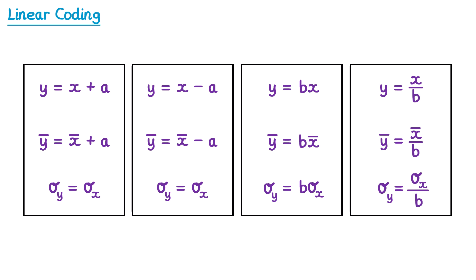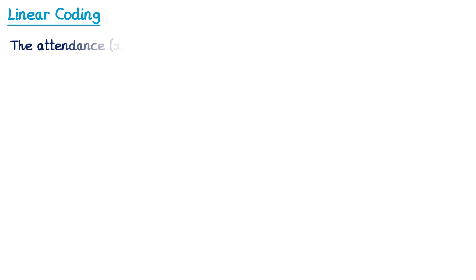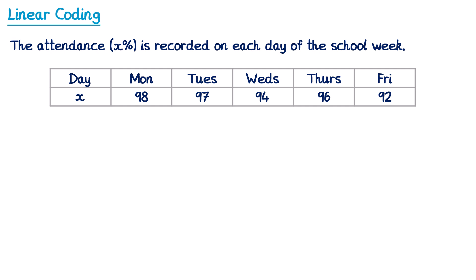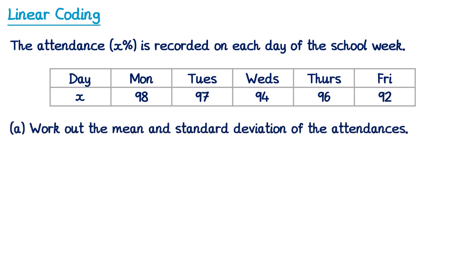Let's have a look at how this could be used in an exam question. In this question, the attendance x percent is recorded on each day of the school week, and we have the attendance values. We need to work out the mean and standard deviation of the attendances. You should find that the mean x bar is 95.4, and the standard deviation sigma x is 2.15.